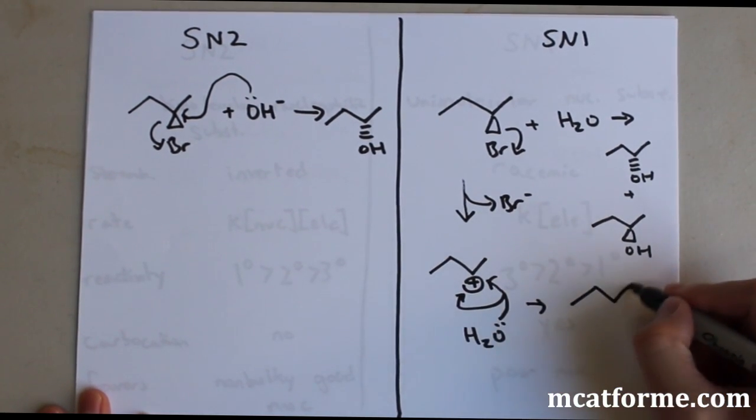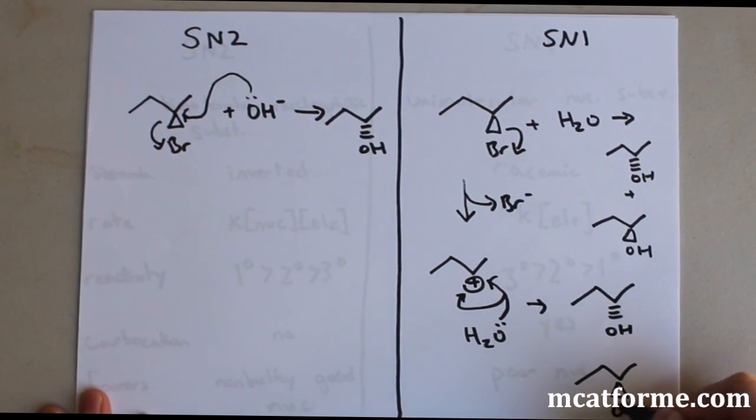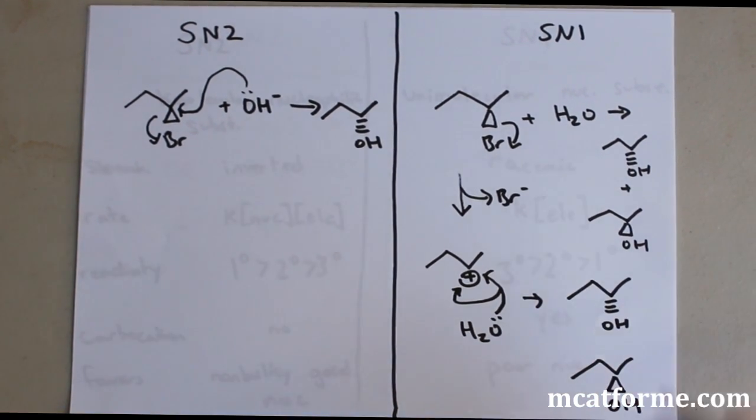Either way, we're going to get both products from the front or also from the back. I skipped the deprotonation step but you guys can figure out how we got from H2O just down to OH. But pretty much, it's going to be one in the back and one in the front. So, that's why we get this racemic mixture.